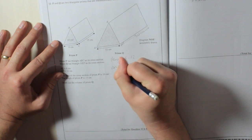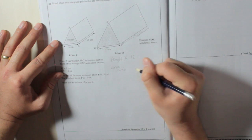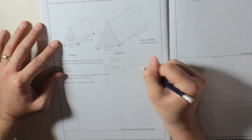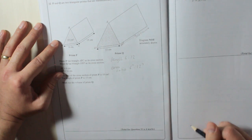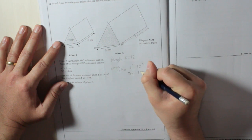Area ratio will be 6 squared to 12 squared, which comes out as 36 to 144.